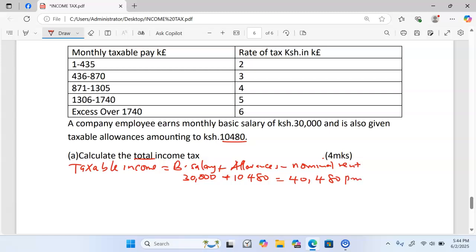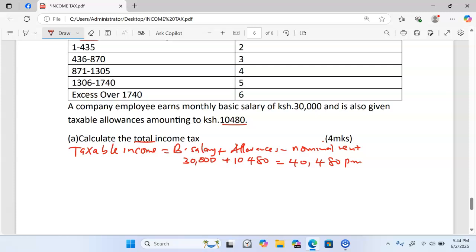Then you look at the table on the left hand side. The table is on monthly but the amount is in Kenyan pounds and therefore we take $40,480 and change it into Kenyan pounds. So we are going to have $40,480 divided by 20 and this one is going to give us Kenyan pounds 2024.